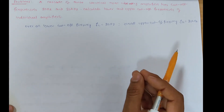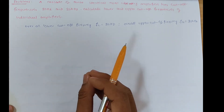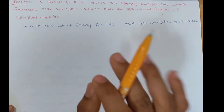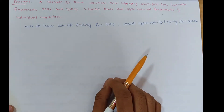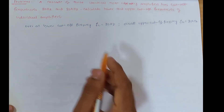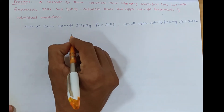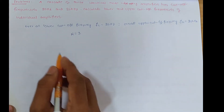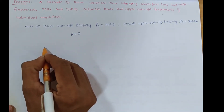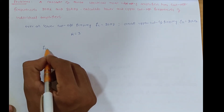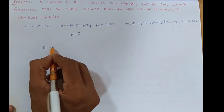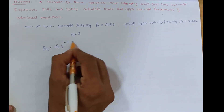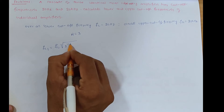The three amplifiers are identical, so if we calculate one amplifier's lower and upper cutoff frequency, the same will be applicable to the remaining amplifiers. The number of amplifiers cascaded is three, so n equals 3. The individual amplifier lower cutoff frequency is: FL1 = FL × √(2^(1/n) − 1), where FL is the overall lower cutoff frequency.